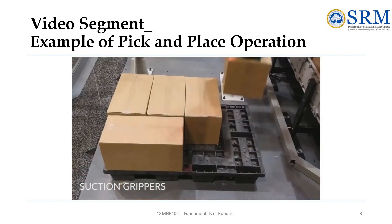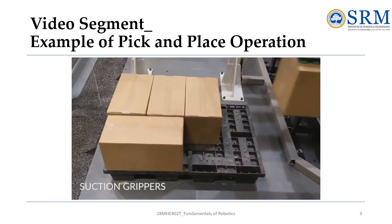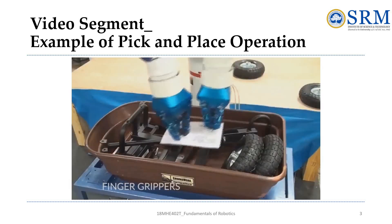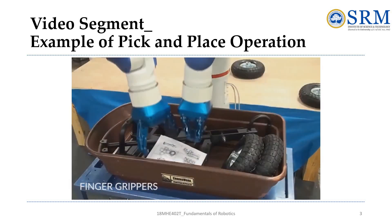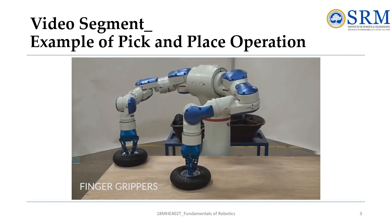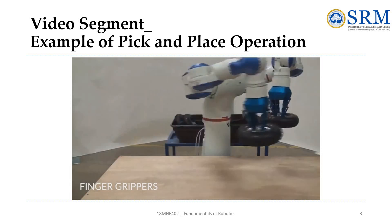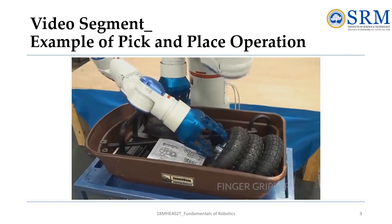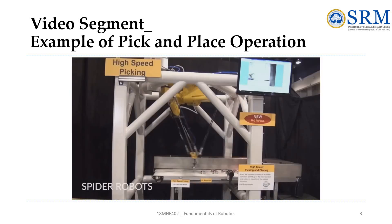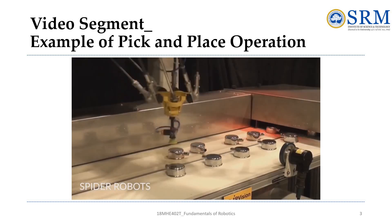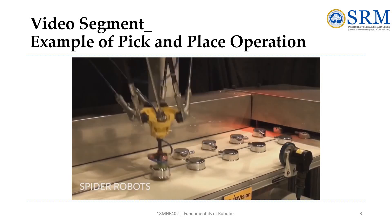Suction grippers use vacuums and cups to manipulate hard, flat products such as boxes and bricks. Finger grippers pinch material between two or more plates to move it and are best utilized when moving empty boxes, packing materials, or handling similar products. Spider robots are another way manufacturers automate pick-and-place applications.